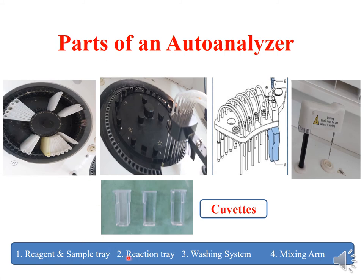Along with this wheel, there is a second wheel known as the reaction tray. In this reaction tray there are slots for a large number of cuvettes in which the reaction will occur. This is how the cuvettes look, and there are two robotic arms — the reagent arm and the sample arm.